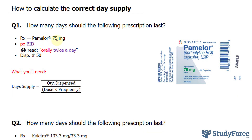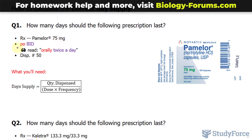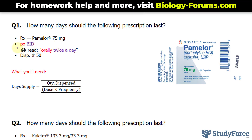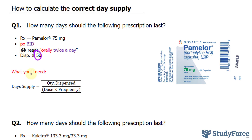We have Pamelor, 75 milligrams. Pamelor is a medicine used to treat symptoms of depression. We're told PO BID, which means orally, and BID represents twice a day. We have to dispense 50 of these.